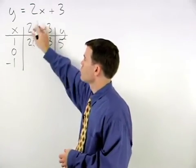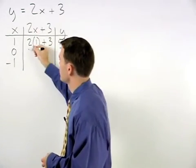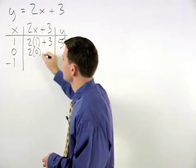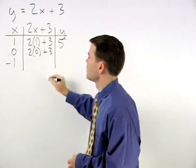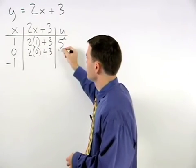Plugging a 0 into the equation for x, we have 2 times 0 plus 3, which is 0 plus 3, or 3.